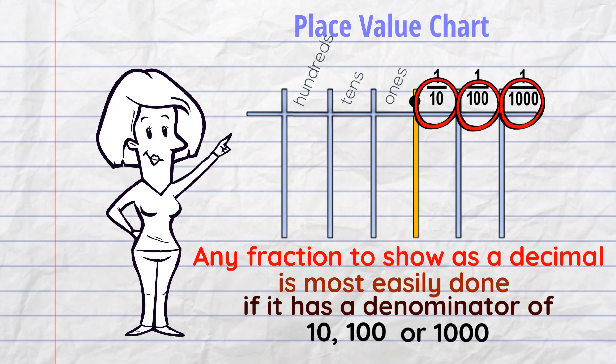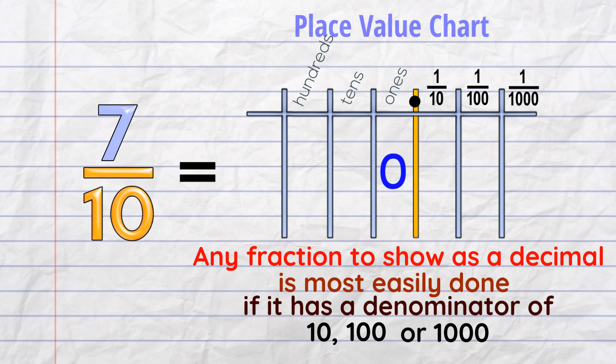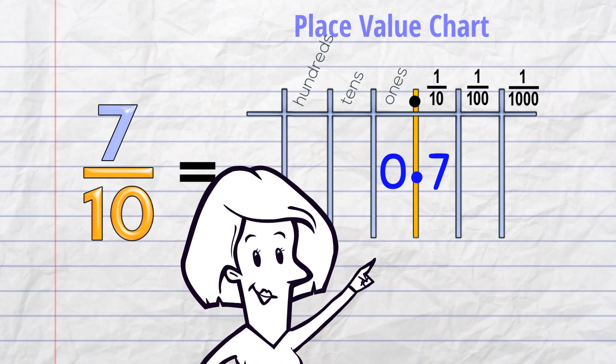100 or 1000. So if we have 7 tenths, it has no whole ones, so we put a zero, decimal point, and the 7 goes in the tenths column because we've got 7 tenths. 7 tenths equals 0.7.